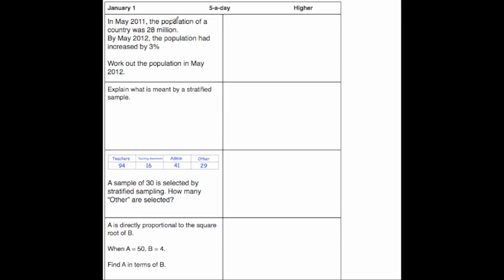So in other words we need to increase 28 million by 3%. So 28 million, add on our 1, 2, 3, 4, 5, 6 zeros. And we need to increase it by 3%. I like to use a multiplier which is 1.03 for a 3% increase.